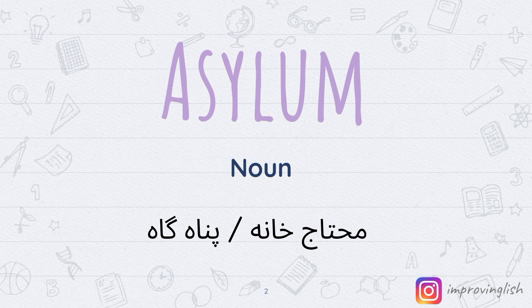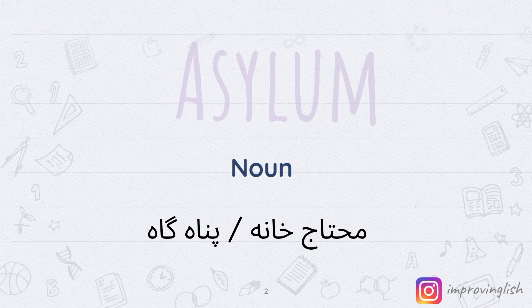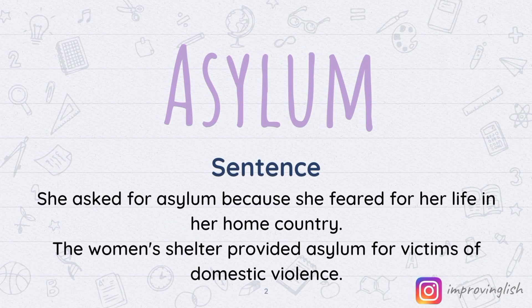Sentences ہیں تو آپ کو clear ہو جائے گا سب۔ پہلا ہے: 'She asked for asylum because she feared for her life in her home country.' اس نے پناہ مانگی، دوسرے ملک میں جا کے asylum مانگی، کیونکہ اسے اپنے وطن میں اپنی جان کا خوف تھا، اپنے ملک میں اپنی جان کا خوف تھا۔